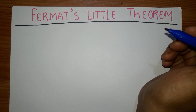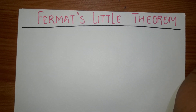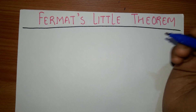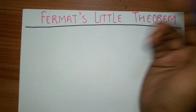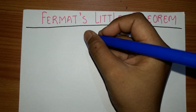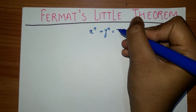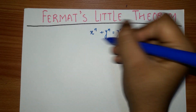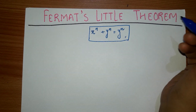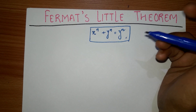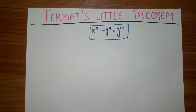Number theory plays a very important role in mathematics, and today I am presenting an important theorem: Fermat's Little Theorem from the branch of number theory. Pierre de Fermat was a great mathematician. Before introducing this theorem, he wrote a linear Diophantine equation in the form x^n + y^n = z^n, which is known as Fermat's Last Theorem. Today, however, we are going to deal with Fermat's Little Theorem.